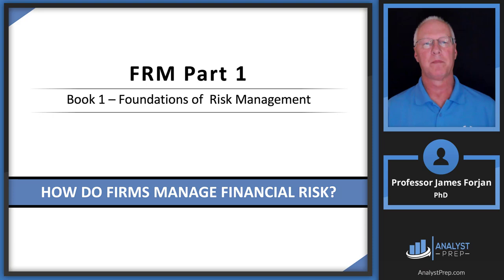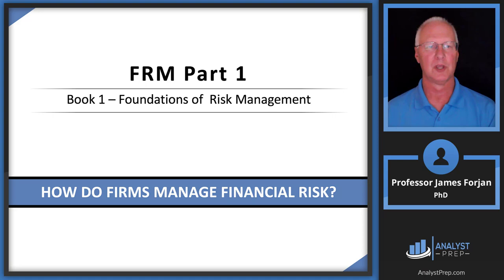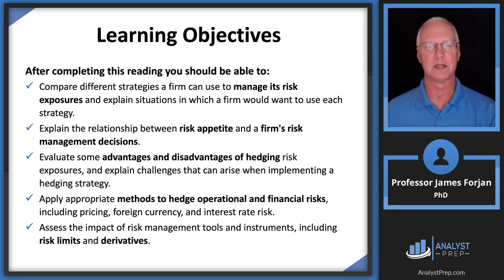This is FRM Part One, Book One, Foundations of Risk Management, and the chapter on how firms manage financial risk. This became one of my favorite chapters almost immediately because it mentioned the Black-Scholes-Merton option pricing model. The chapter also discusses Anheuser-Busch and commodity price risk facing breweries, which piqued my interest further.